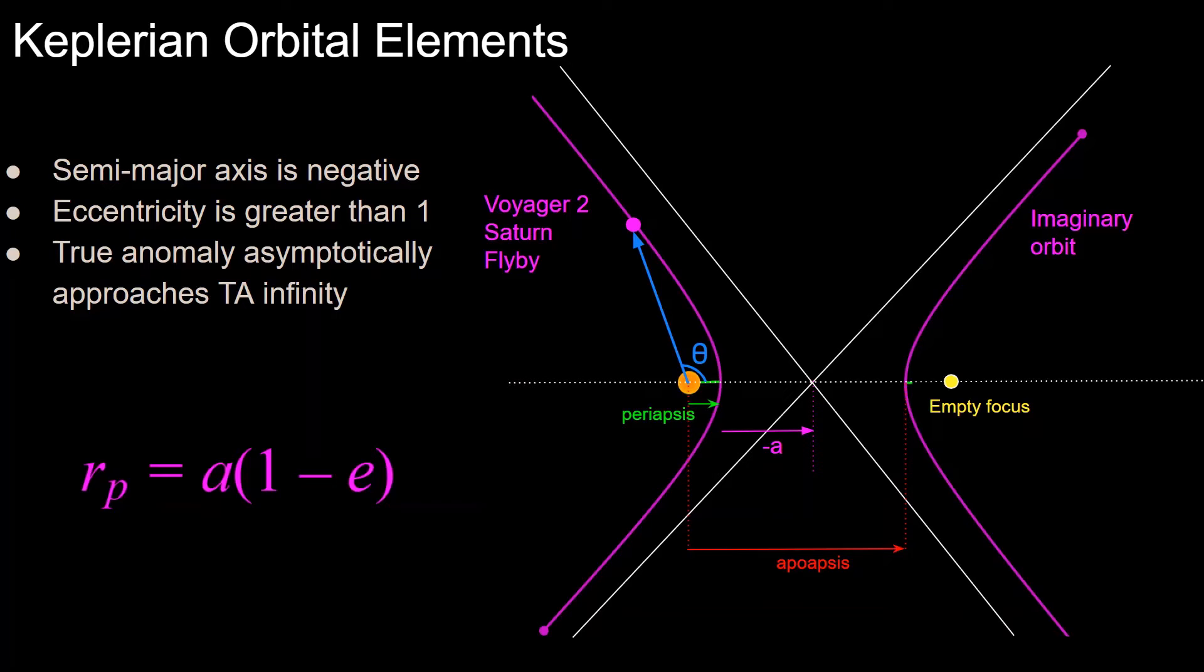Apoapsis also kind of loses its meaning, since there is no farthest point from the center of the orbit, since it's infinity, so it's defined as a distance from the central body to the imaginary periapsis point in the imaginary orbit over here.